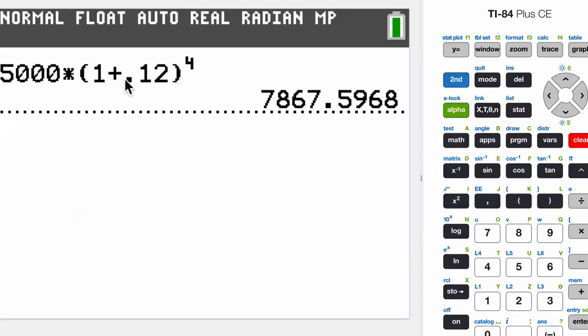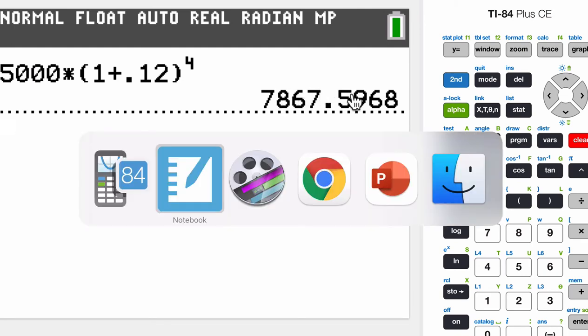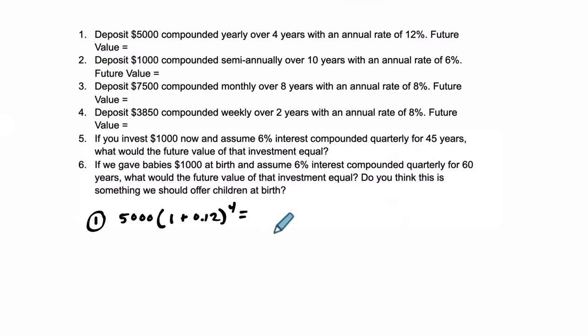So $5,000 times 1 plus 0.12 to the fourth is $7,867.60. And we're going to round it to the nearest penny. So we're going to write it down, $7,867.60. That's the first one.